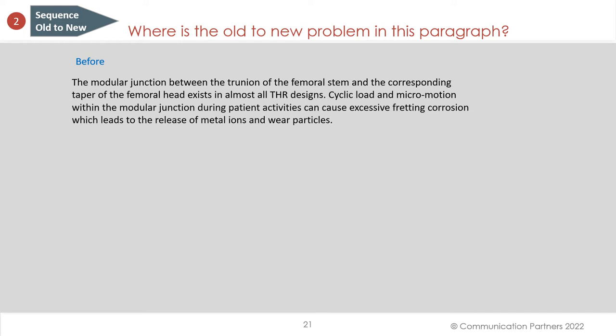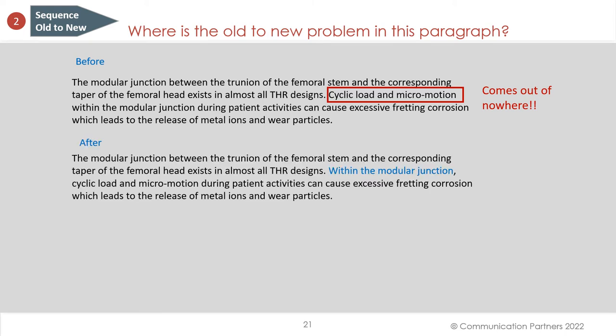Where is the old-to-new problem in this paragraph? It's the cyclic load and micromotion that comes out of nowhere. The concept that connects both sentences is the modular junction. The modular junction between the trunnion of the femoral stem and the corresponding taper of the femoral head exists in almost all THR designs. Within the modular junction — we begin the second sentence with that older idea before getting to the newer idea of cyclic load and micromotion. We have an explicit echoing of the older concept.